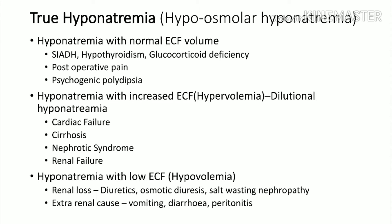True hyponatremia must always be compared with body water status. There are three types: hyponatremia with normal extracellular fluid (ECF) volume, hyponatremia with increased ECF volume, and hyponatremia with low ECF volume. Hyponatremia with normal water is mainly due to SIADH, hypothyroidism, glucocorticoid deficiency, postoperative pain, and psychogenic polydipsia.